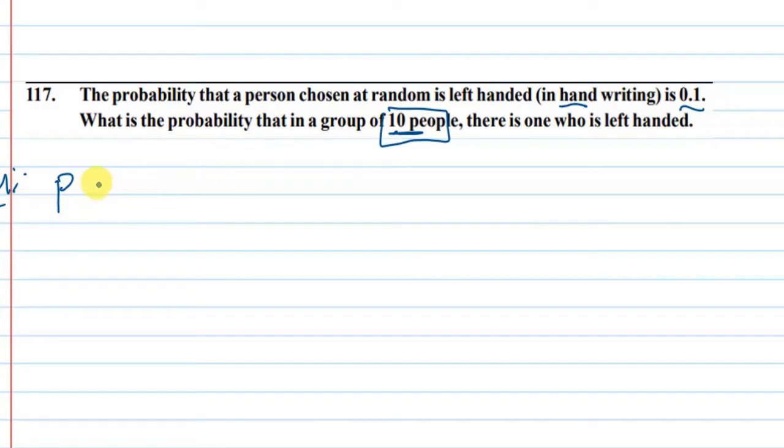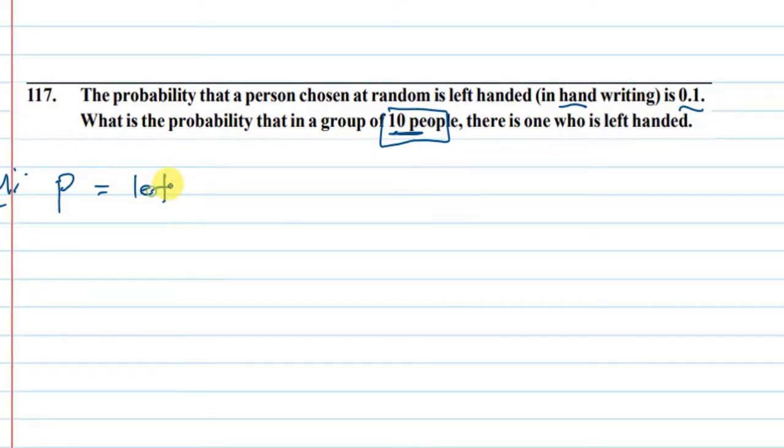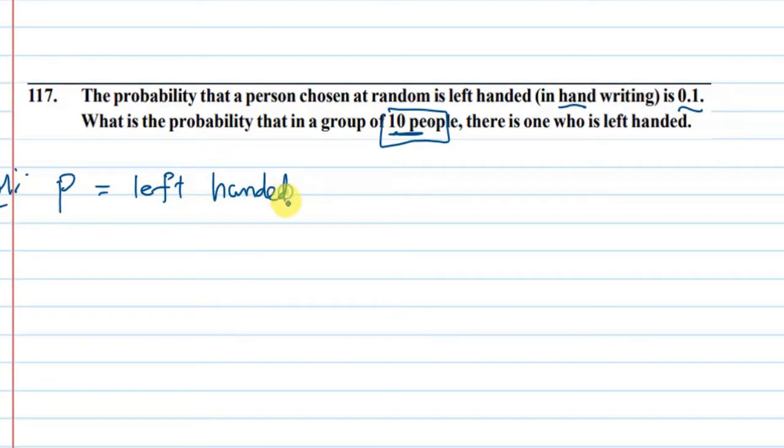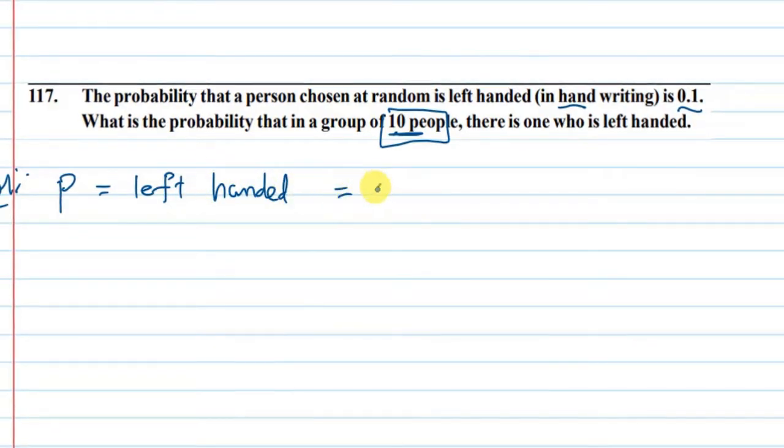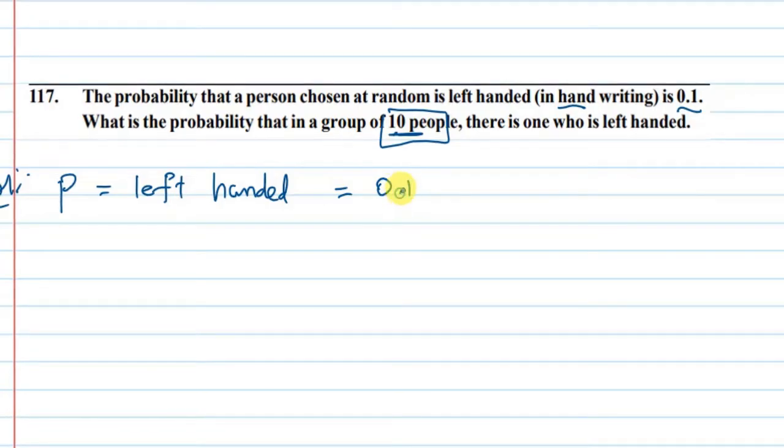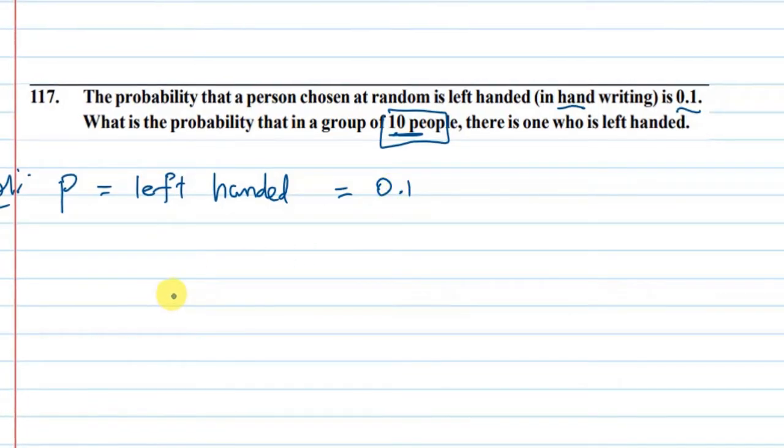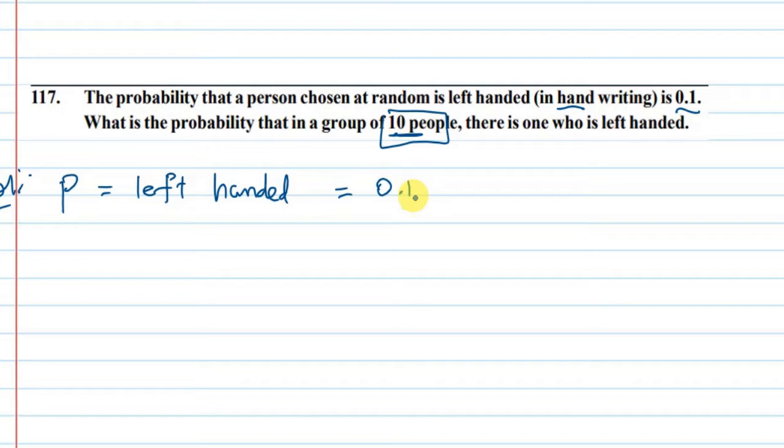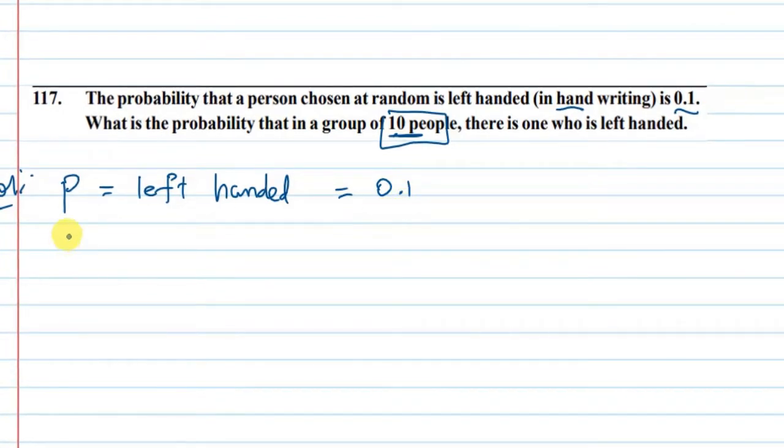So p equals the success probability. If we have a left-handed person, the probability is 0.1 for every 10 members.